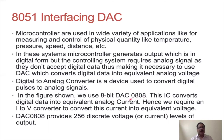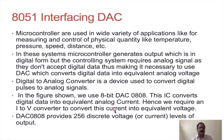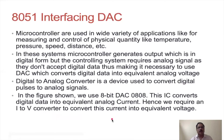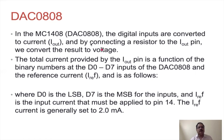The IC converts digital data into equivalent analog current, so a current-to-voltage (I-to-V) converter is required to convert this current into equivalent voltage. The DAC provides 256 discrete voltage levels at the output. The digital inputs of the MC1408 / DAC 0808 are converted to current, and by connecting a resistor to the I-output pin the result is converted to voltage. The total current at the I-output pin is a function of the binary number at D0 to D7 inputs.